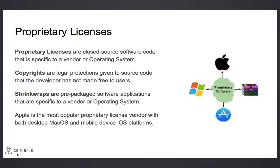Proprietary licenses are closed-source software code, specific to a vendor or operating system — a common example is Apple. Copyrights are legal protections given to source code that the developer does not make freely available to users. Shrink wraps are pre-packaged software that is specific to vendor or operating system versions. The most popular proprietary licensed vendor is Apple, and it uses it for both its desktop macOS and mobile device iOS platforms.